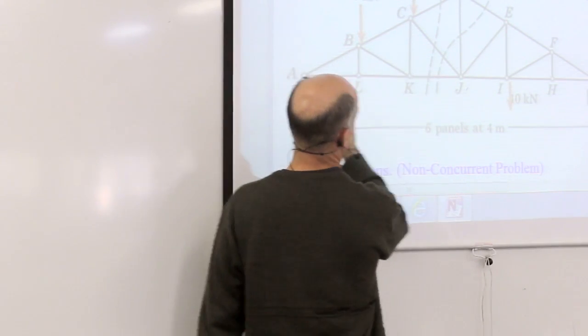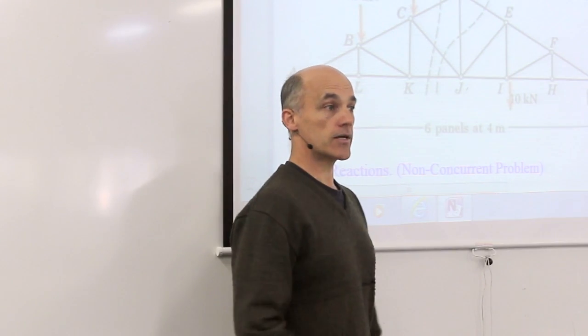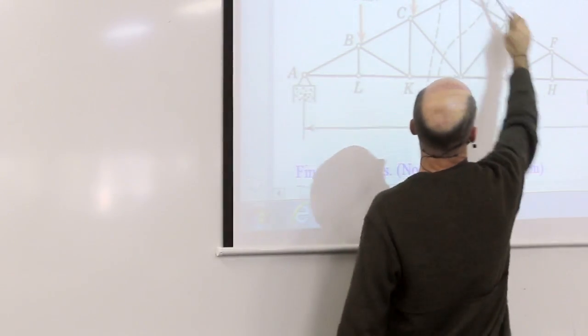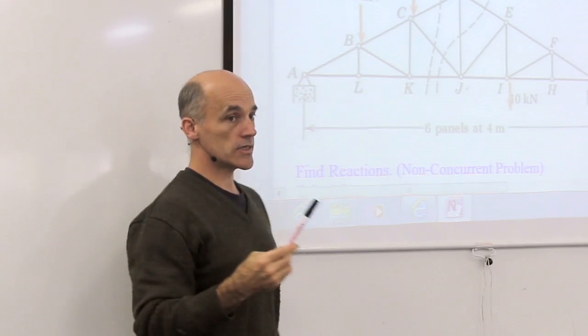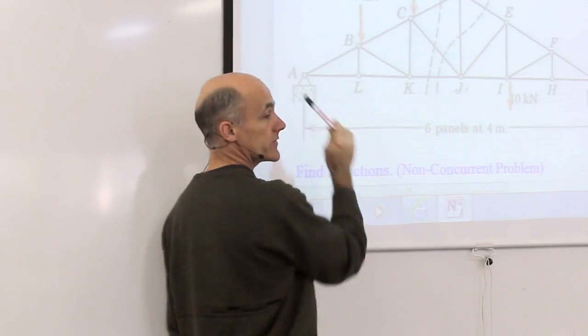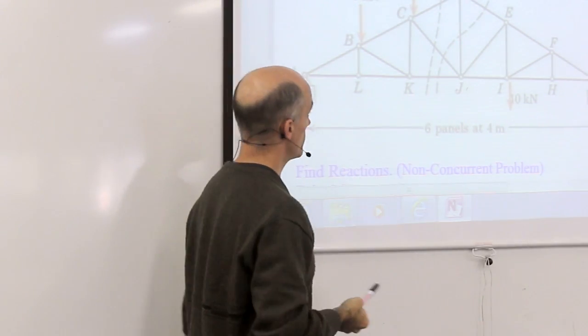For example, when I'm working out the reaction forces on this truss, I'm using a body which is the entire truss. Free body diagram for the entire truss. When I'm using the method of joints, I'm using a free body diagram of a single joint, which we did before.